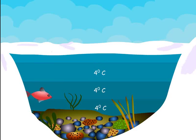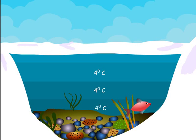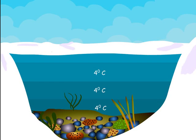As ice is a bad conductor of heat, water below the surface layer remains at 4 degrees Celsius. As a result, fish and other aquatic animals remain alive in this water.